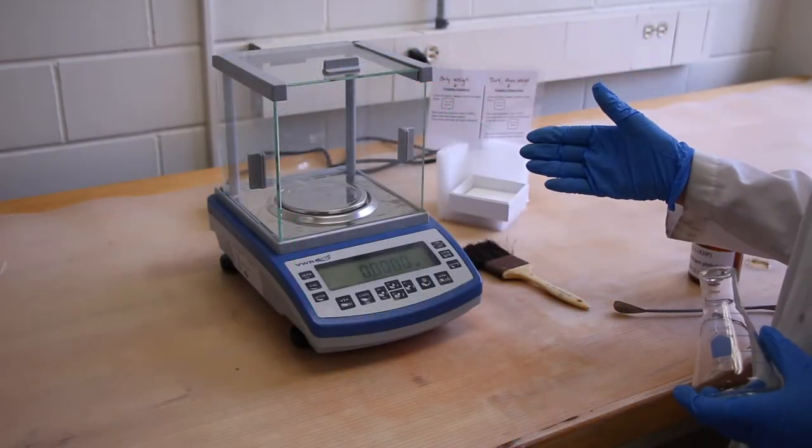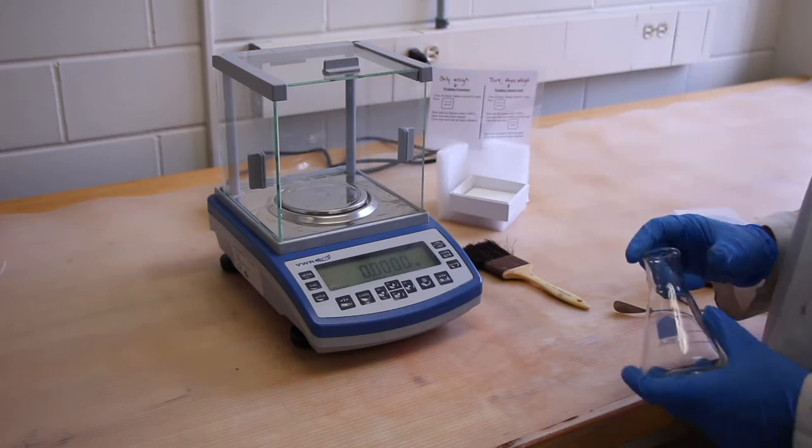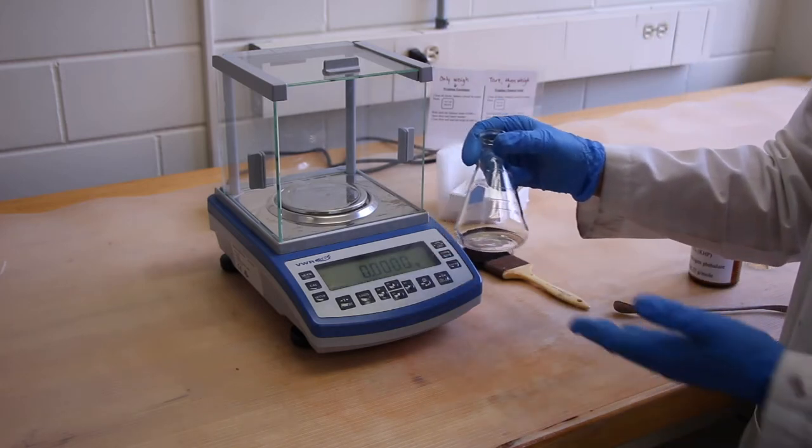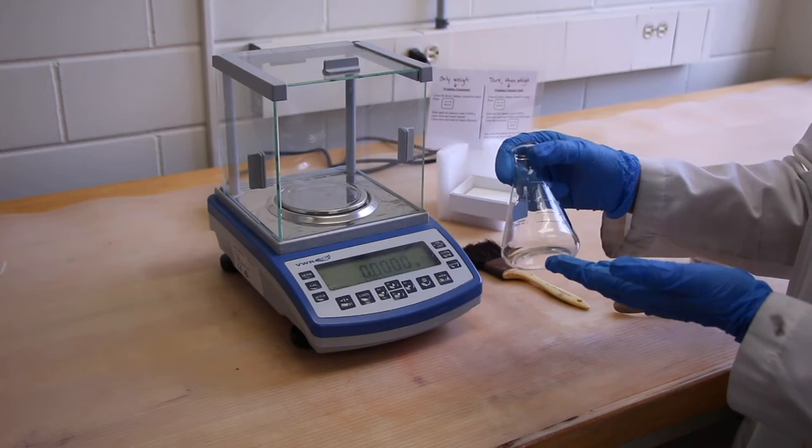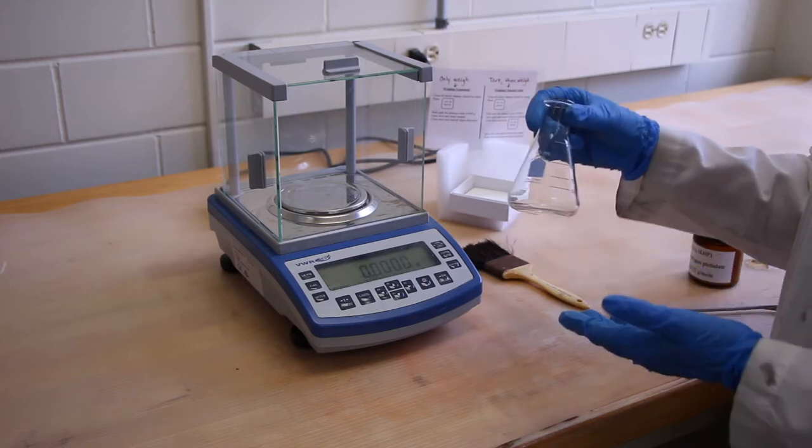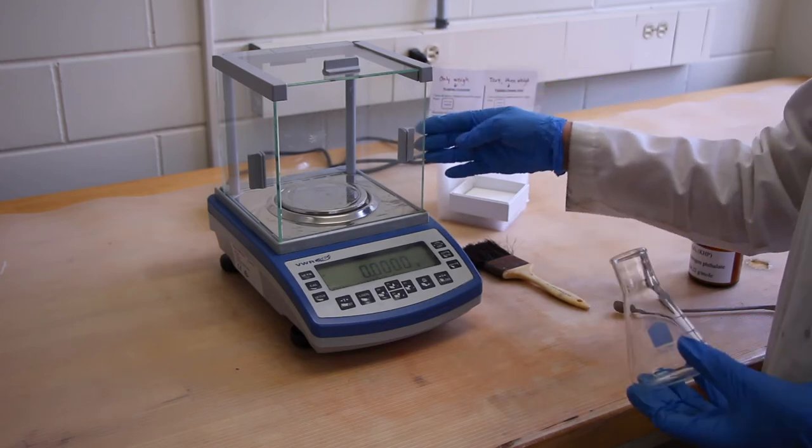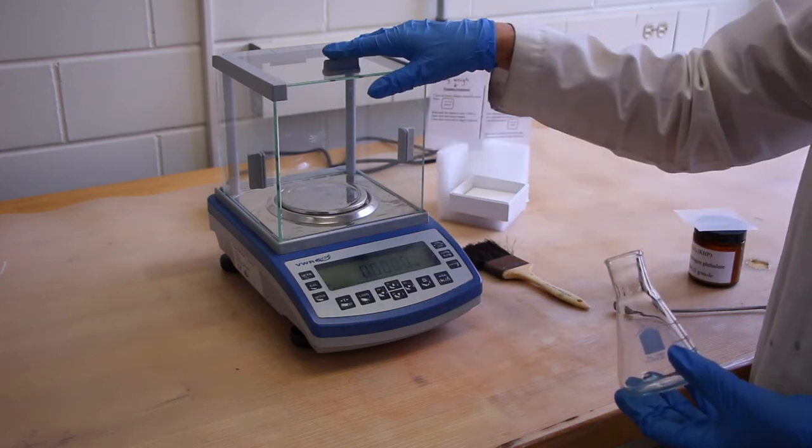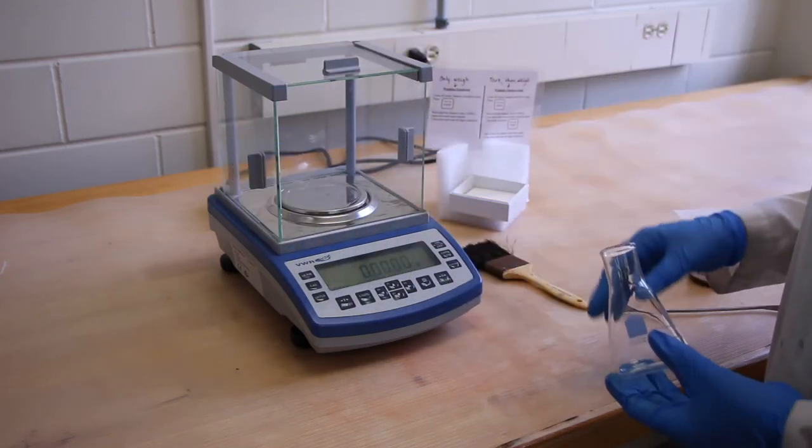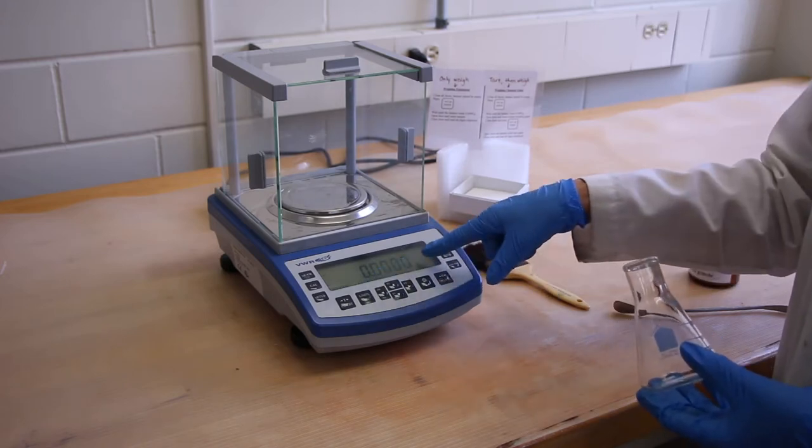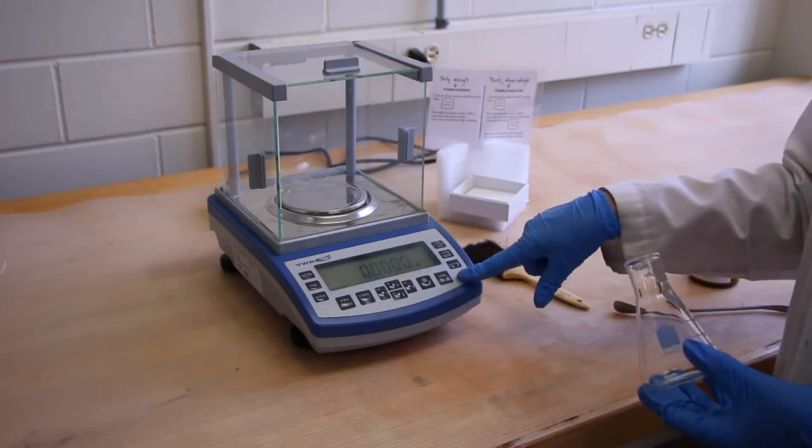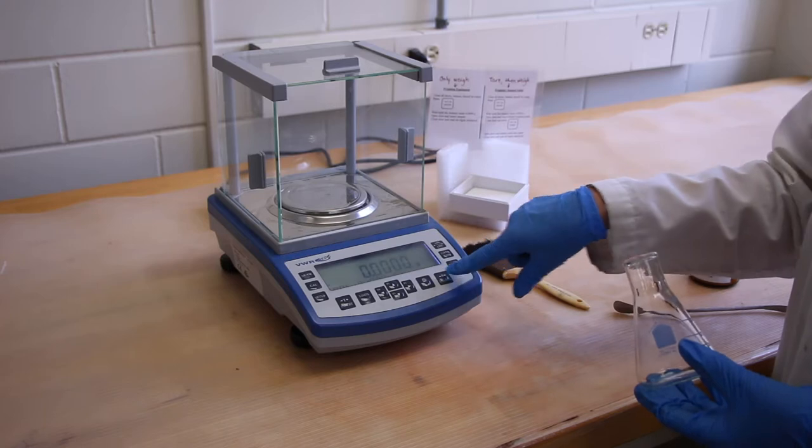We're in the balance room now. We're going to do two different kinds of weighings. The first is sometimes you just want the mass of a piece of equipment. And what we'll do first is we will shut all the doors of the balance, make sure that they're shut, and make sure the scale reads zero. If it does not, you can press the zero button.